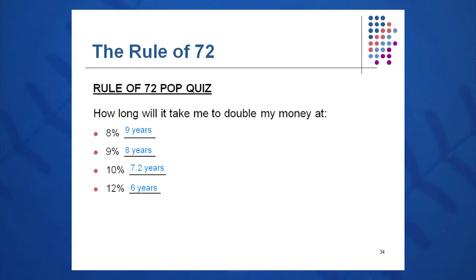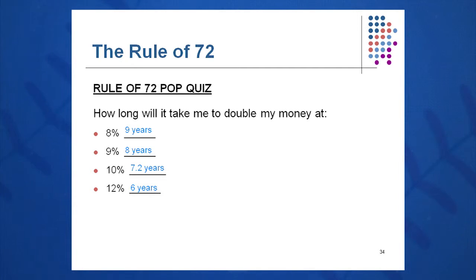How about if I put the money in at 10%? How long will it take me? 7.2 years — 72 divided by 10 equals 7.2 years. How about if I can invest my money at 12%? How long will it take me to double my money? Just 6 years. And so on.